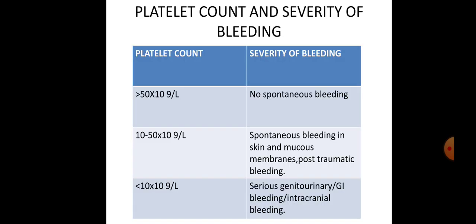Regarding platelet count and severity of bleeding: when platelet count is above 50 × 10⁹ per liter, no spontaneous bleeding is manifested. When platelet count is between 10 to 50 × 10⁹ per liter, spontaneous bleeding in skin and mucous membranes can occur, and post-traumatic bleeding can be seen. When platelet count is below 10 × 10⁹ per liter, CNS or gastrointestinal bleeding can be seen.